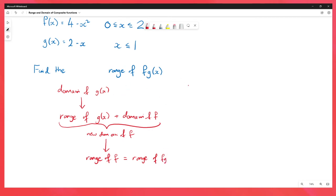So let's go through this and apply what we're doing. So the domain of g of x is x is less than or equal to 1. Like we did before, if we combine the range of g, which we said was g of x is greater than or equal to 1, and combine that with the domain of f, which is going to be x is between 0 and 2, this is then going to give us a new domain for f in the same way that we thought about before.